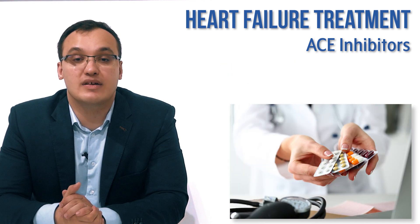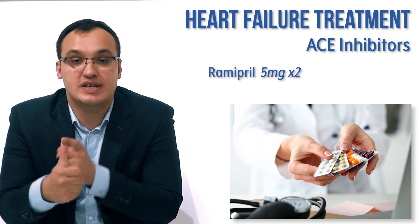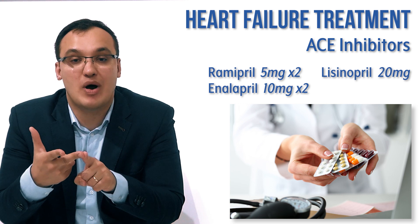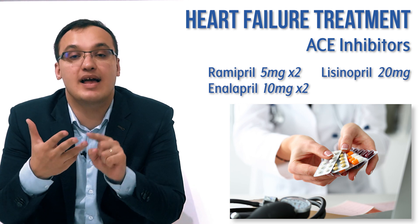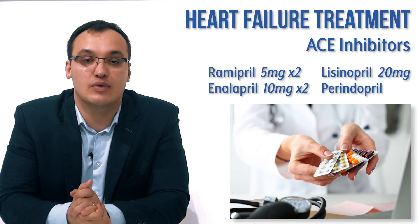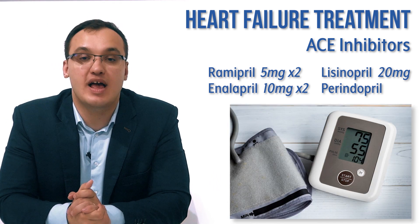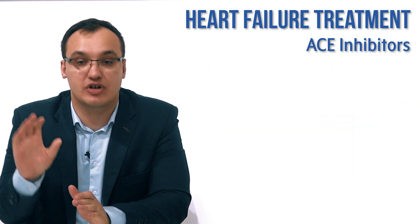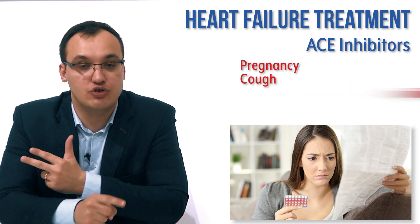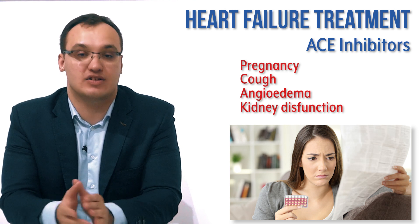To repeat the doses: ramipril 5mg twice a day, enalapril 10mg twice a day, lisinopril 20mg once a day, and perindopril when hypotension occurs with the other medications. Please remember the contraindications: pregnancy is contraindicated, and we also have cough, angioedema, and poor kidney function.